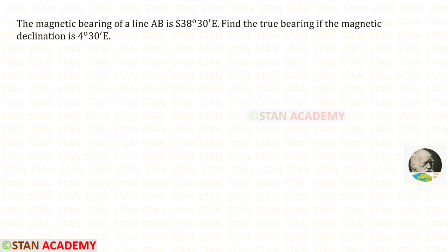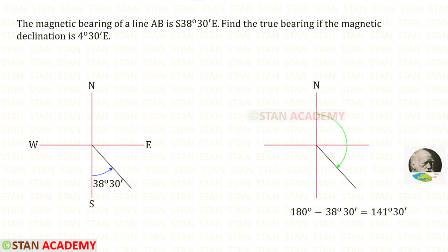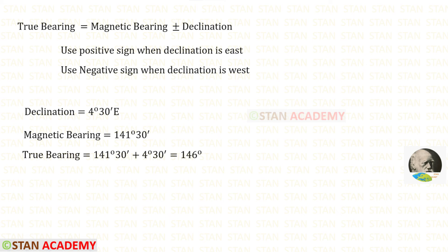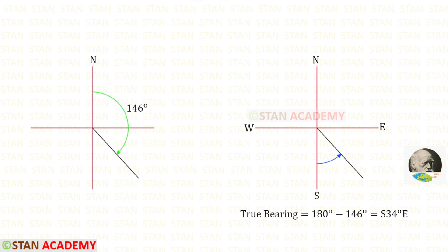Let us see another problem. The magnetic bearing of line AB is south 38 degrees 30 minutes east. Find the true bearing if the magnetic declination is 4 degrees 30 minutes east. First, we convert the reduced bearing into whole circle bearing by subtracting from 180 degrees, giving us 141 degrees 30 minutes. Since the declination is east, we use the positive sign. Adding these two gives us 146 degrees. We convert to reduced bearing by subtracting 180 degrees, giving us south 34 degrees east.